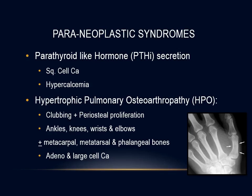Hypertrophic pulmonary osteoarthropathy is defined by the presence of clubbing and periosteal proliferation of the tubular bones associated with lung cancer. Clinically it is characterized by symmetrical painful arthropathy usually involving the ankles, knees, wrists, and elbows; metacarpal, metatarsal, and phalangeal bones may also be involved. Radiographs of the long bones — such as the tibia and fibula — show characteristic periosteal new bone formation. Symptoms may resolve after tumor resection.